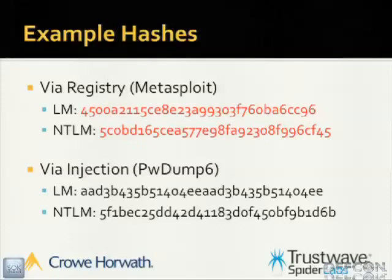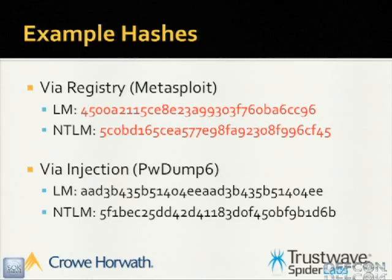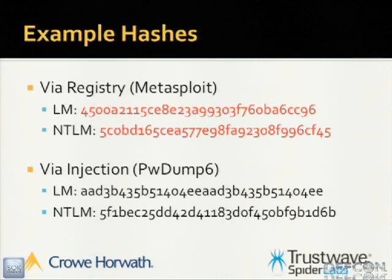I decide to fight the AV, kill it, and use my old standby PWDump6 to inject into memory. Turns out I get completely different hashes. With the registry reading method via Metasploit I get an LM hash. With injection via PWDump6, that LM hash is just AAD3B4 - representing blank, meaning no LM hash is there. So injection gets one set of hashes from the same system, and registry reading gets a completely different set. I can use the hashes from injection, so those are the right ones. I called coworkers - they had the same experience.